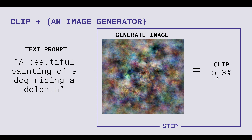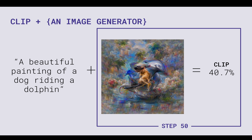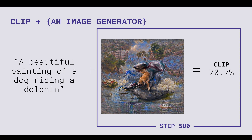If you set the step count really low, it won't make big improvements, which is why you tend to see steps or iterations in the hundreds. Starting from noise, we want to iterate many times to reach the right image. At step 50, you might have a rough dog shape and CLIP starts scoring it better. The generator learns how to move the image in the right direction. At the max step value, it probably still won't give a perfect score but will be moving in the right direction.